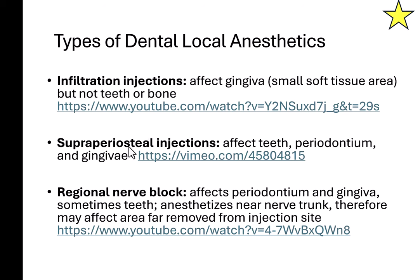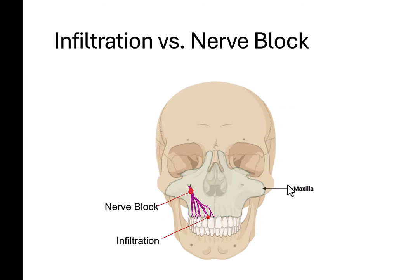With a supraperiosteal injection, it's not just the gum that's numb — it's the gingiva, the teeth, and the periodontium, the tissues surrounding the teeth. With a nerve block, it numbs everything: the teeth, the gingiva, and the surrounding tissues. We'll go over examples of when it will and won't numb the teeth.